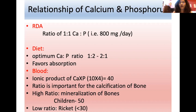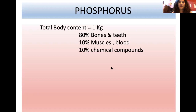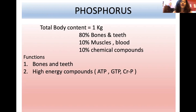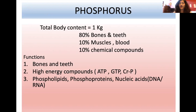The total body content of phosphorus is approximately 1 kg — same as calcium. Of this, 80% remains in bone and teeth; 10% is found in muscle and blood; and 10% is found in chemical compounds (the metabolically active phosphorus). Functions include: providing strength to bones and teeth along with calcium; synthesis of high-energy compounds like ATP, GTP, and creatine phosphate; and formation of phospholipids, phosphoproteins, and nucleic acids. In nucleic acids, phosphodiester bonds form between nucleotides, leading to synthesis of DNA and RNA.